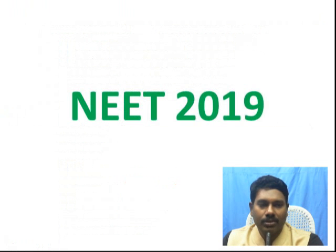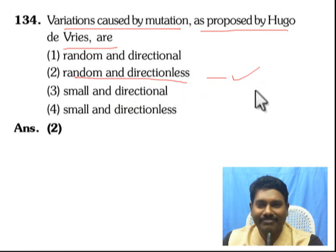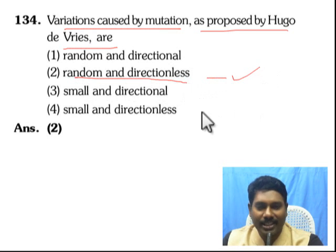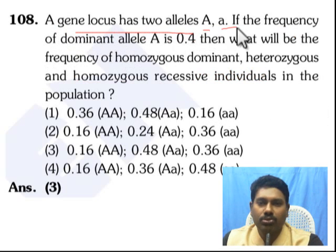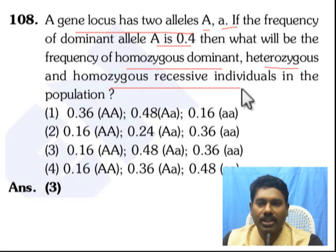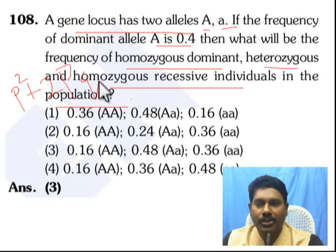The recent trend in 2019: variations are caused by mutation as proposed by Hugo de Vries, and these are random and directionless. A gene locus has two alleles — capital A and lowercase a. If the frequency of the dominant allele capital A is 0.4, find the frequency of homozygous dominant, heterozygous, and homozygous recessive individuals in the population using the Hardy-Weinberg equation: (P + Q)² = P² + 2PQ + Q².